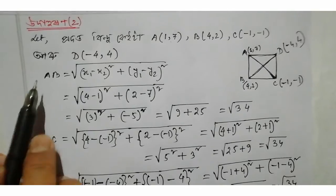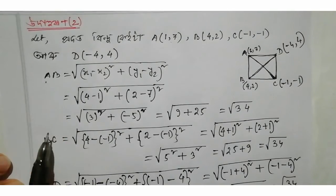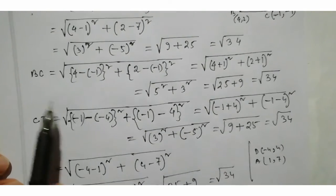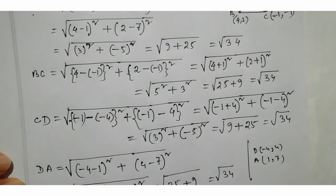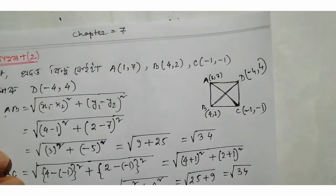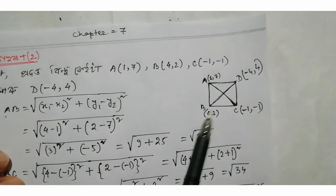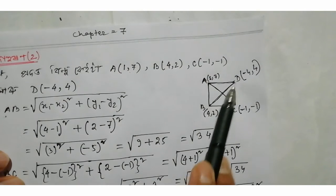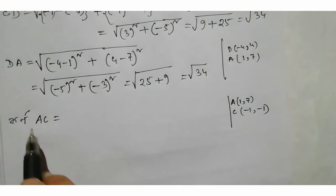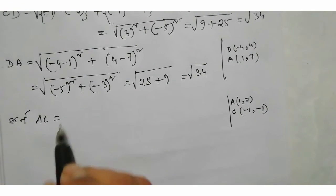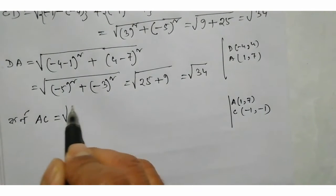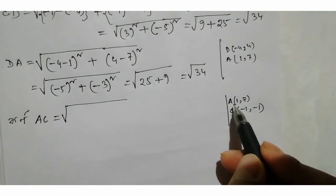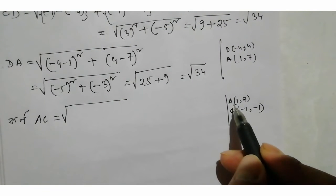So we have AB, BC, CD, DA — all calculated. I am also going to call it AC and BD as the diagonal distances. Students, I am going to calculate AC.